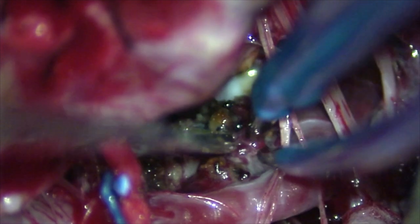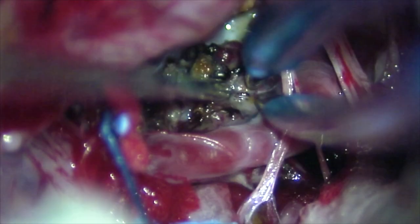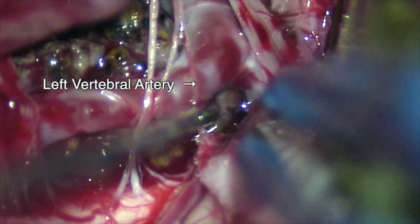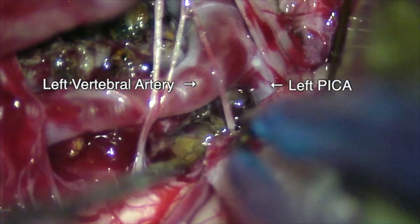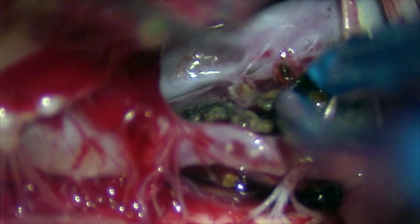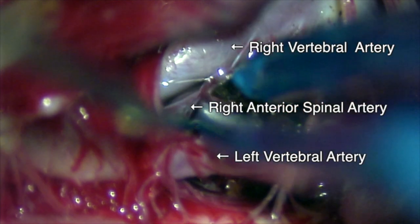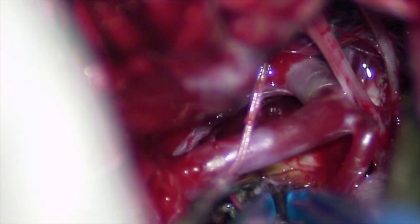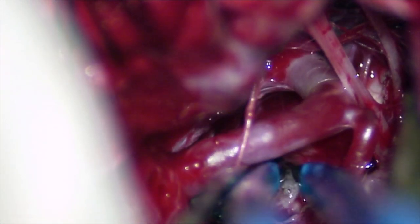A difficult part was to dissect both vertebral arteries and the vertebrobasilar junction while preserving the anterior spinal arteries. We see how laterally we can be with this approach. Now we can see the dissection on the part located dorsally to the vertebral arteries. You see the exit of the PICA. Now we separate the cavernoma from the anterior spinal artery of the opposite side.